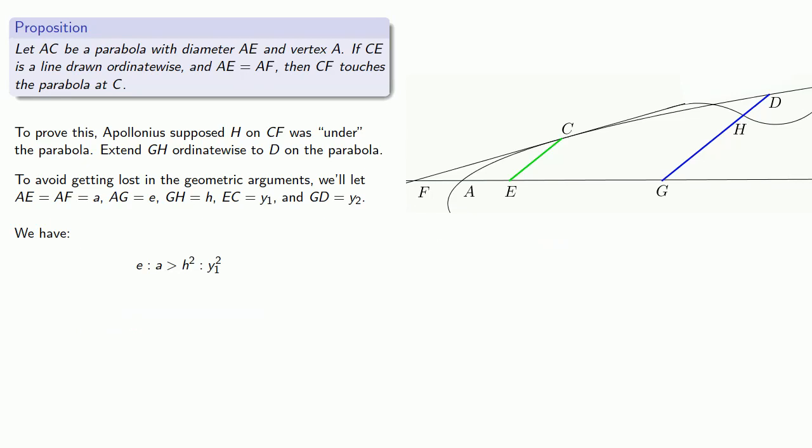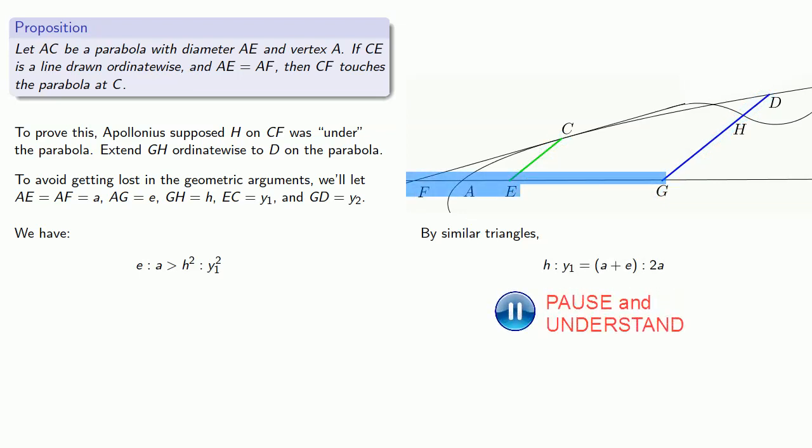Now because CE and GD are parallel, we have a couple of similar triangles. And so by similar triangles, we have H is to Y1 as A plus E is to 2A.